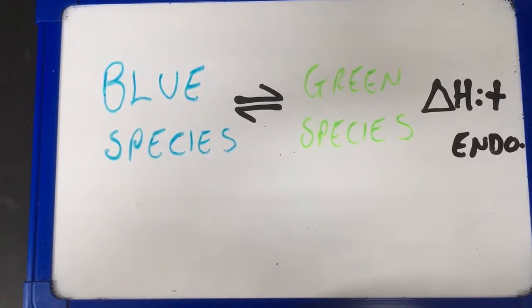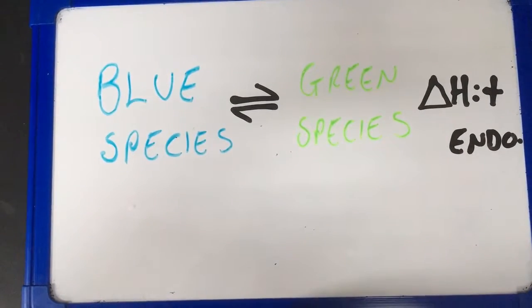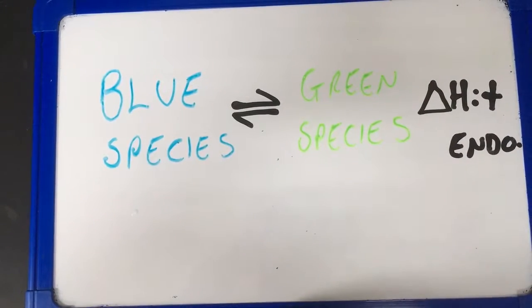I've chosen the blue on the left, the green on the right, and I've made our equation endothermic in the forward direction. Delta H is positive.